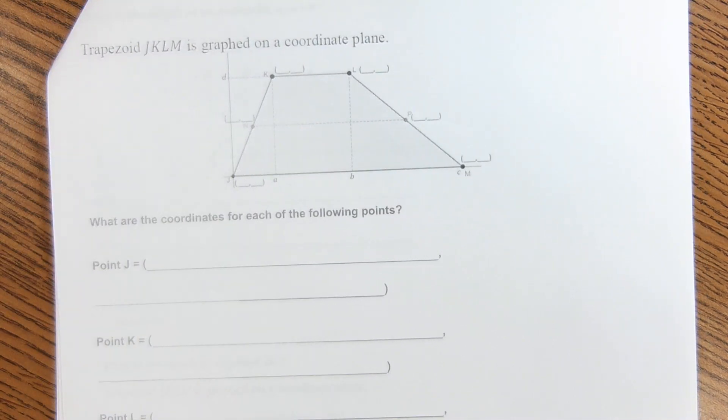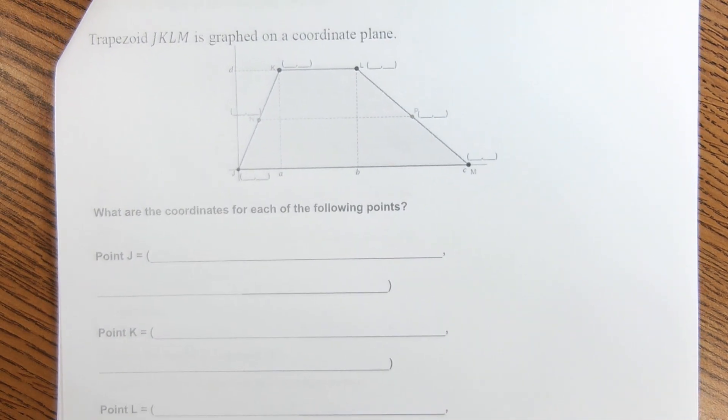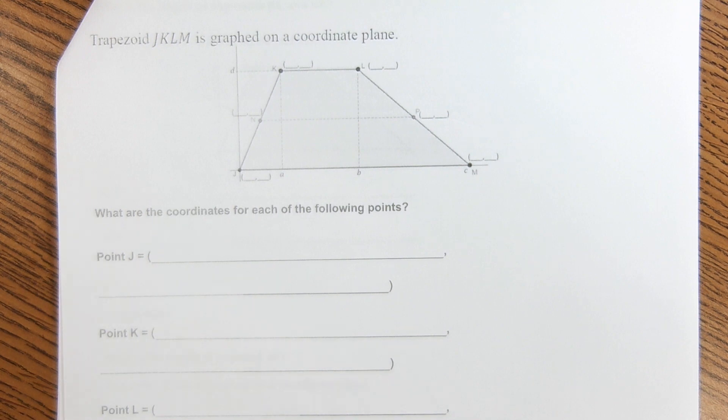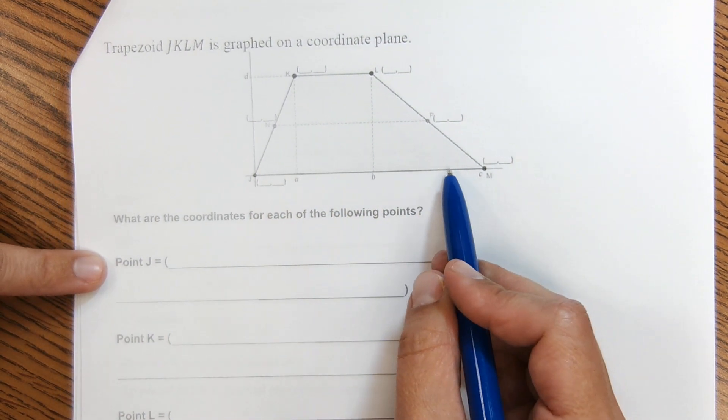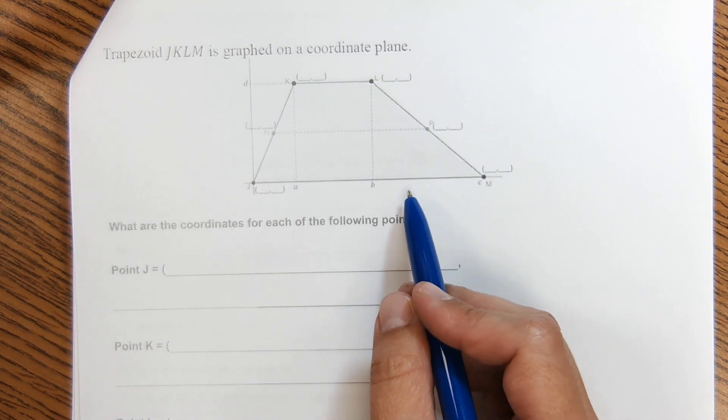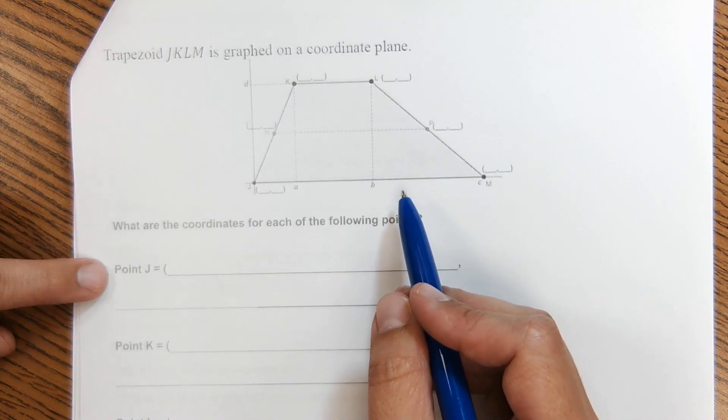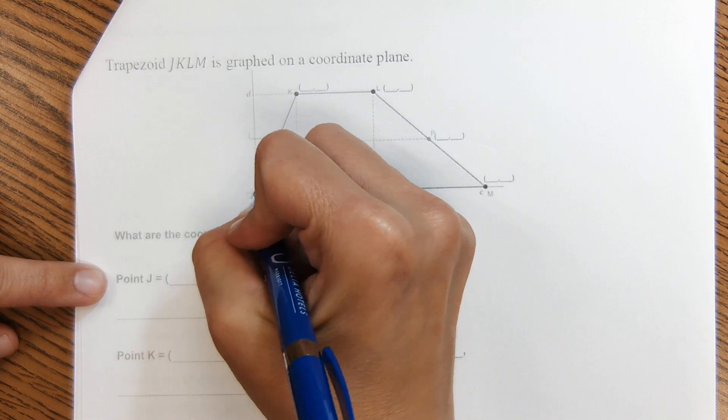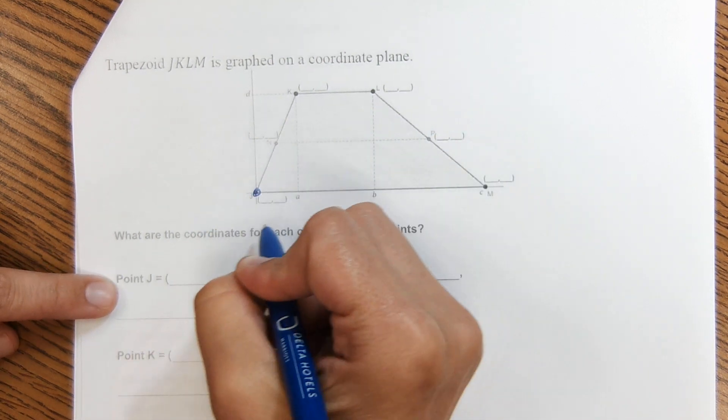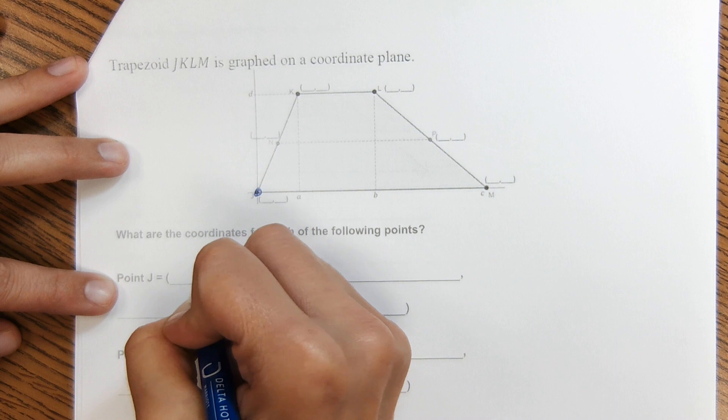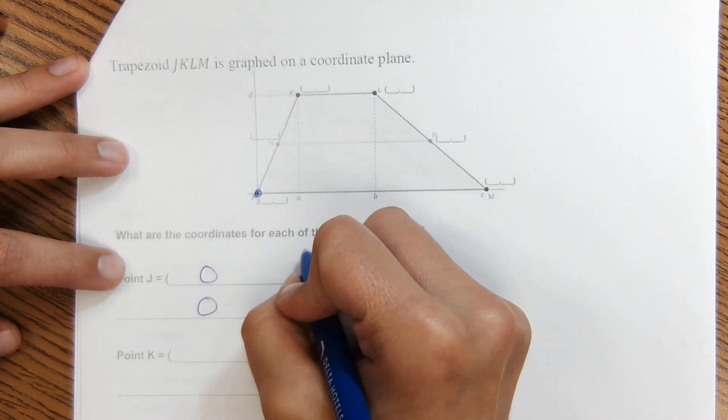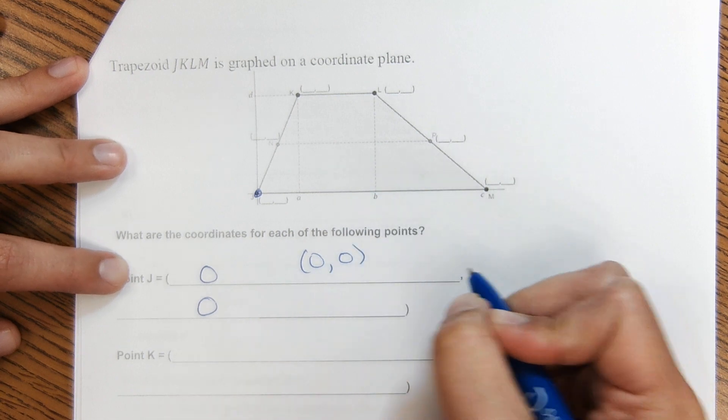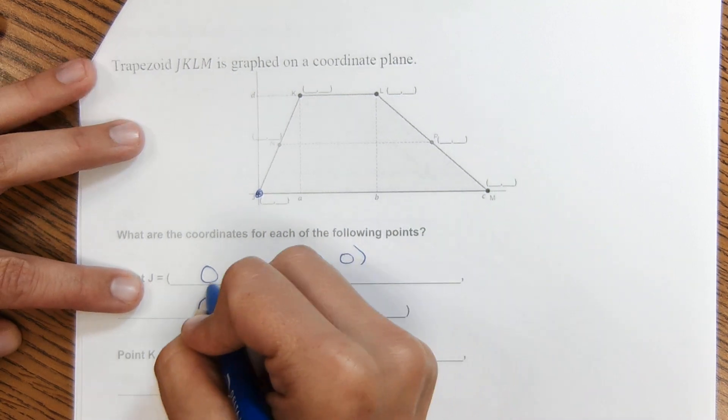This one here threw off my students a bit. But it's actually a pretty easy question once you know what they're looking for. It says, what are the coordinates of each of the following points? But this graph doesn't have very many numbers. It's a lot of letters. So first of all, point j, which is right here, what are the coordinates? Well, j is at the origin on the graph. So the coordinates of j would be 0, 0. I know these blanks are kind of spread out. We put it in Schoology, but it would look like this. So 0, 0.